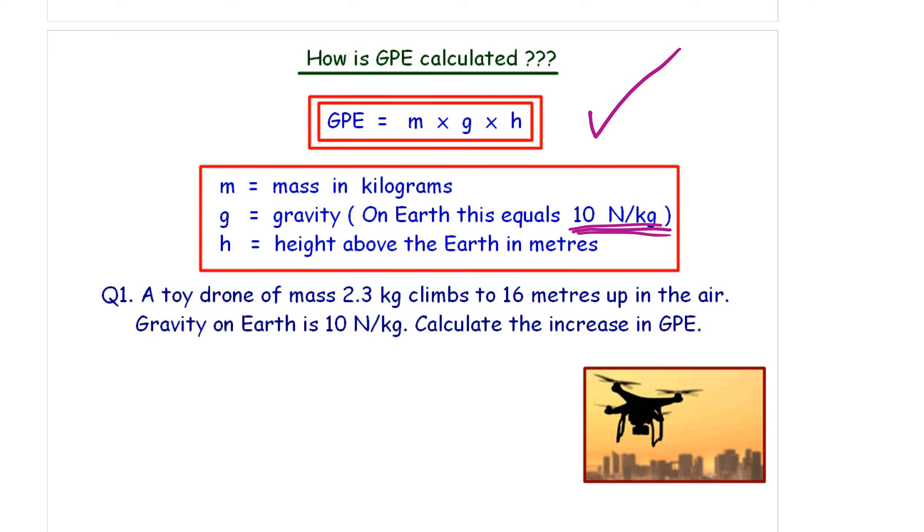Let's just have a look at this question. Question one, a toy drone has a mass of 2.3 kilograms. We've got the mass. It climbs up 16 meters into the air. We've got the height. And gravity on Earth is 10. We can calculate its increase in GPE. First thing that we write down, always, we write down the equation. M times G times H. The second thing that we do, always, is put the numbers in.